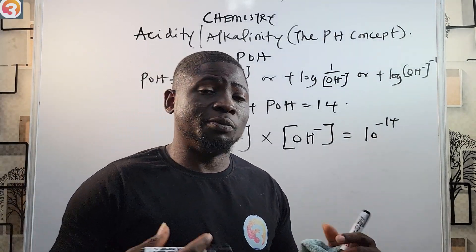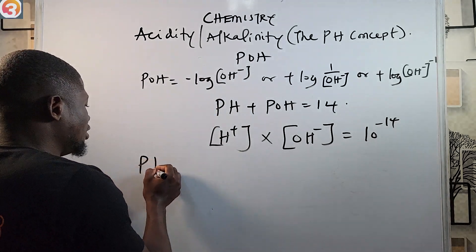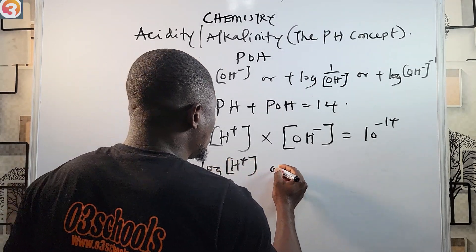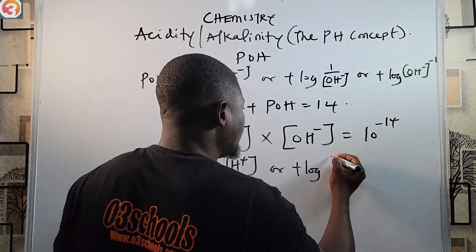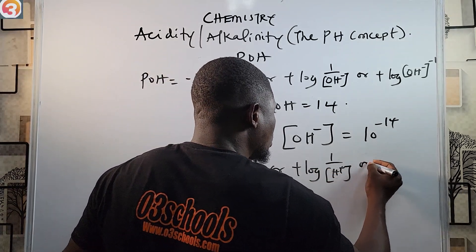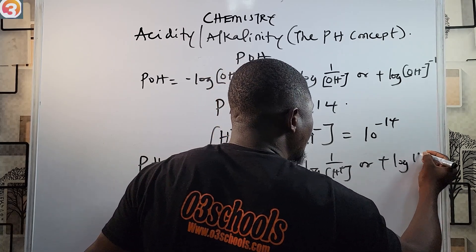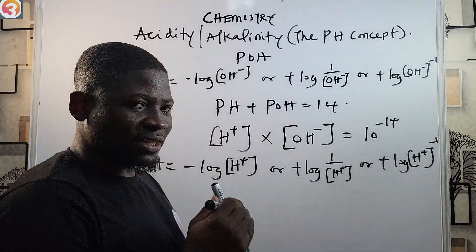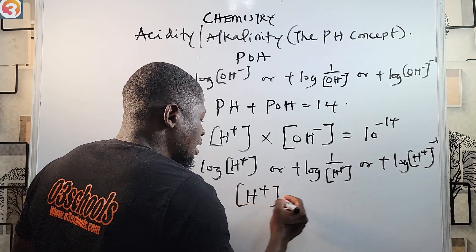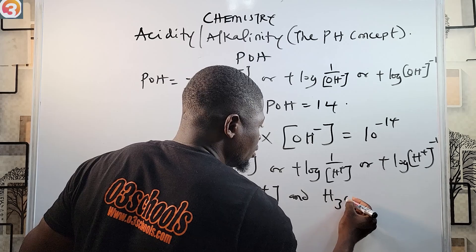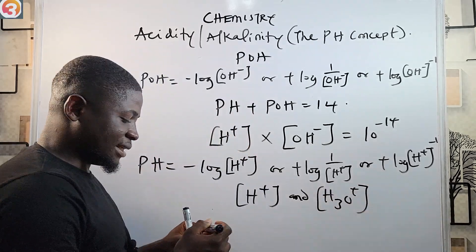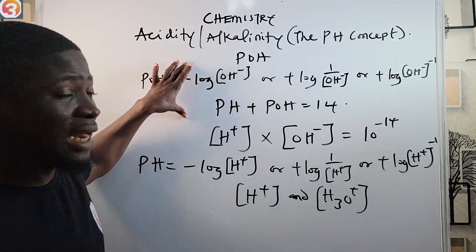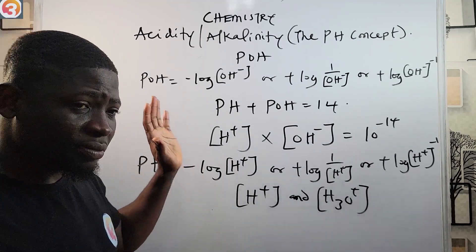So these are the formulas we'll be using to calculate pH: negative logarithm of hydrogen ion concentration; positive logarithm of one over hydrogen ion concentration; or positive logarithm of hydrogen ion concentration raised to the power minus one. Hydrogen ion and hydronium ion can be used interchangeably — they all work together.